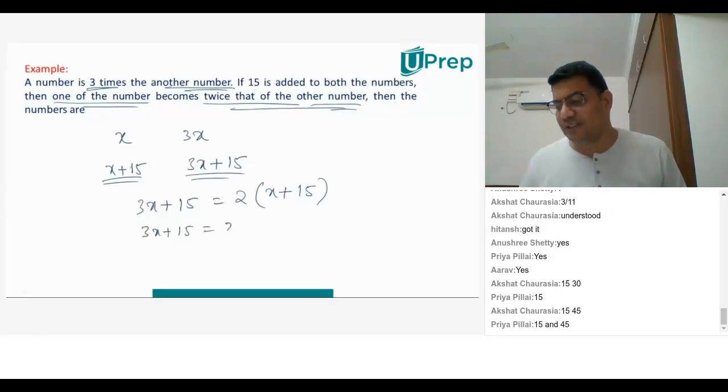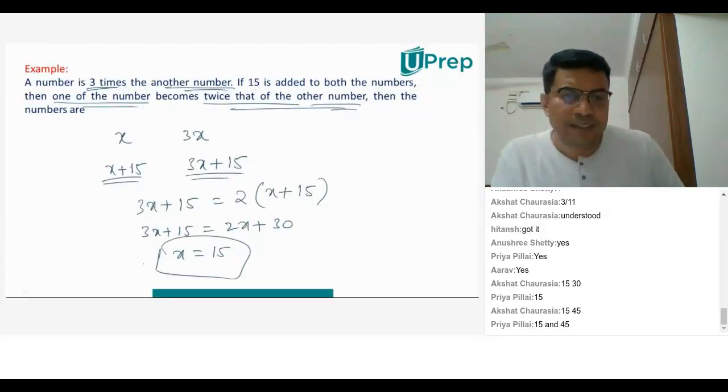...2X plus 2 into 15 is 30. So your 3X minus 2X is X. X is equal to 15. Once you get X equals 15, the problem looks very simple.